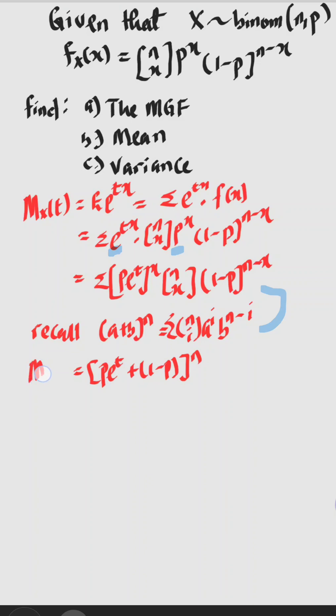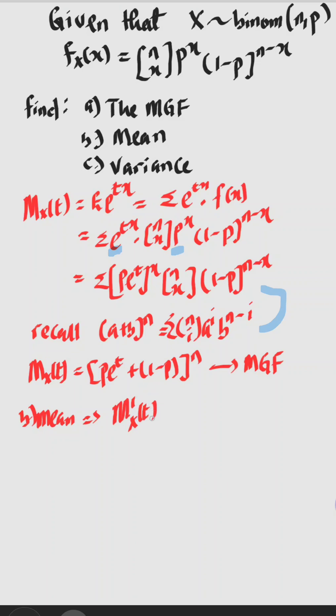So we can say that this is the MGF of the binomial distribution. Now from here we want to find the mean. The mean is easy to get using the MGF — what you need to do is find the first derivative of the MGF and set t equal to zero.